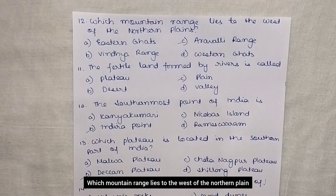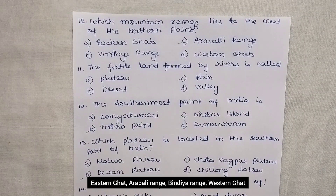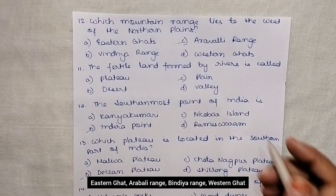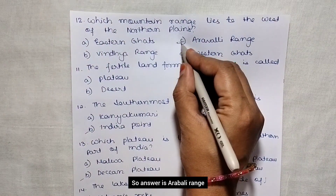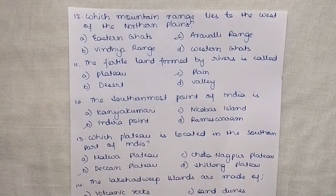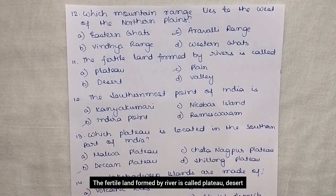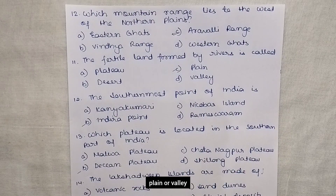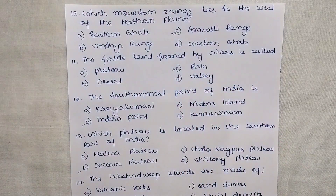Which mountain range lies to the west of the northern plain? The options are Eastern Ghat, Aravalli Range, Vindhya Range, and Western Ghat. The answer is Aravalli Range. The fertile land formed by a river is called: plateau, desert, plain, or valley? Answer is plain.